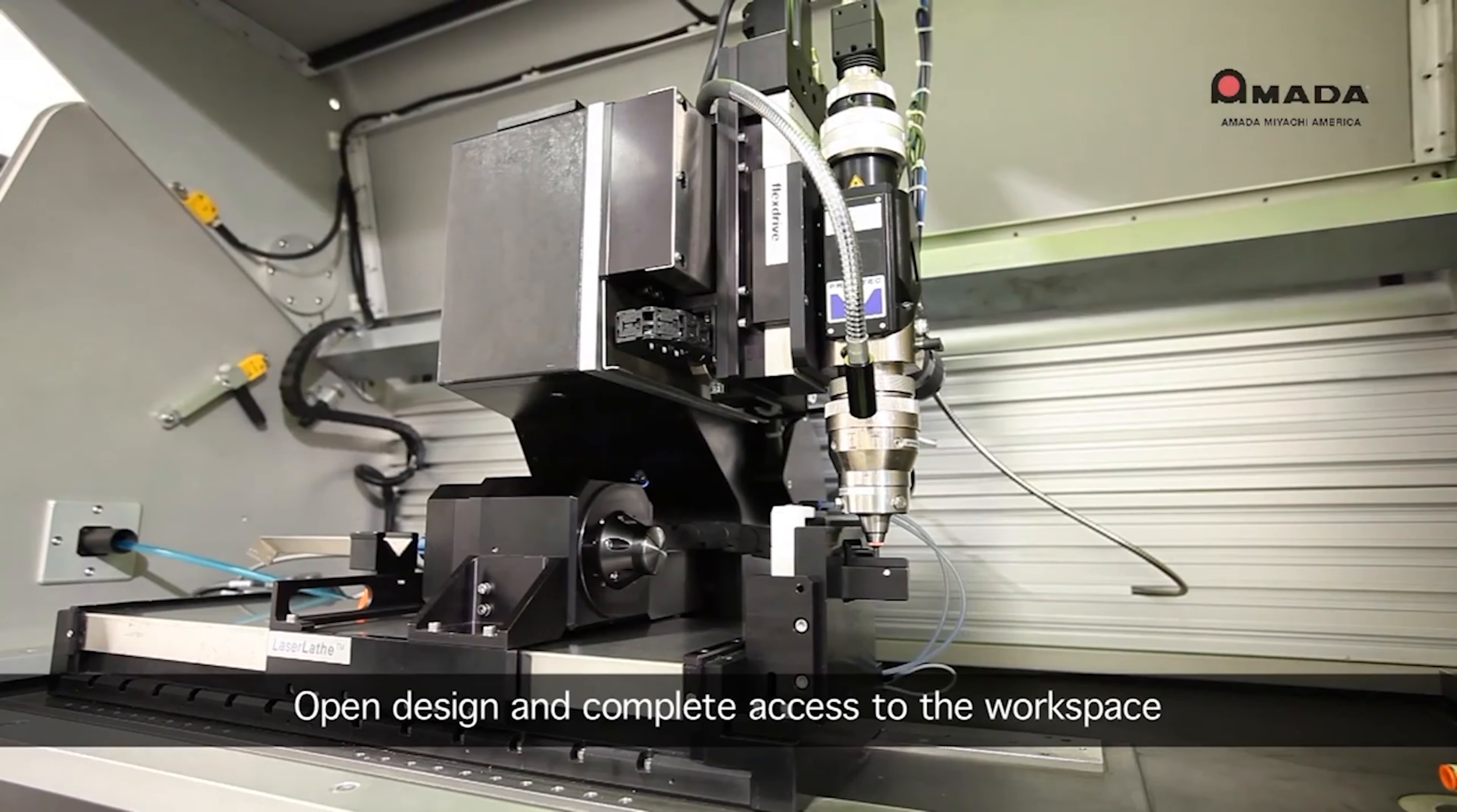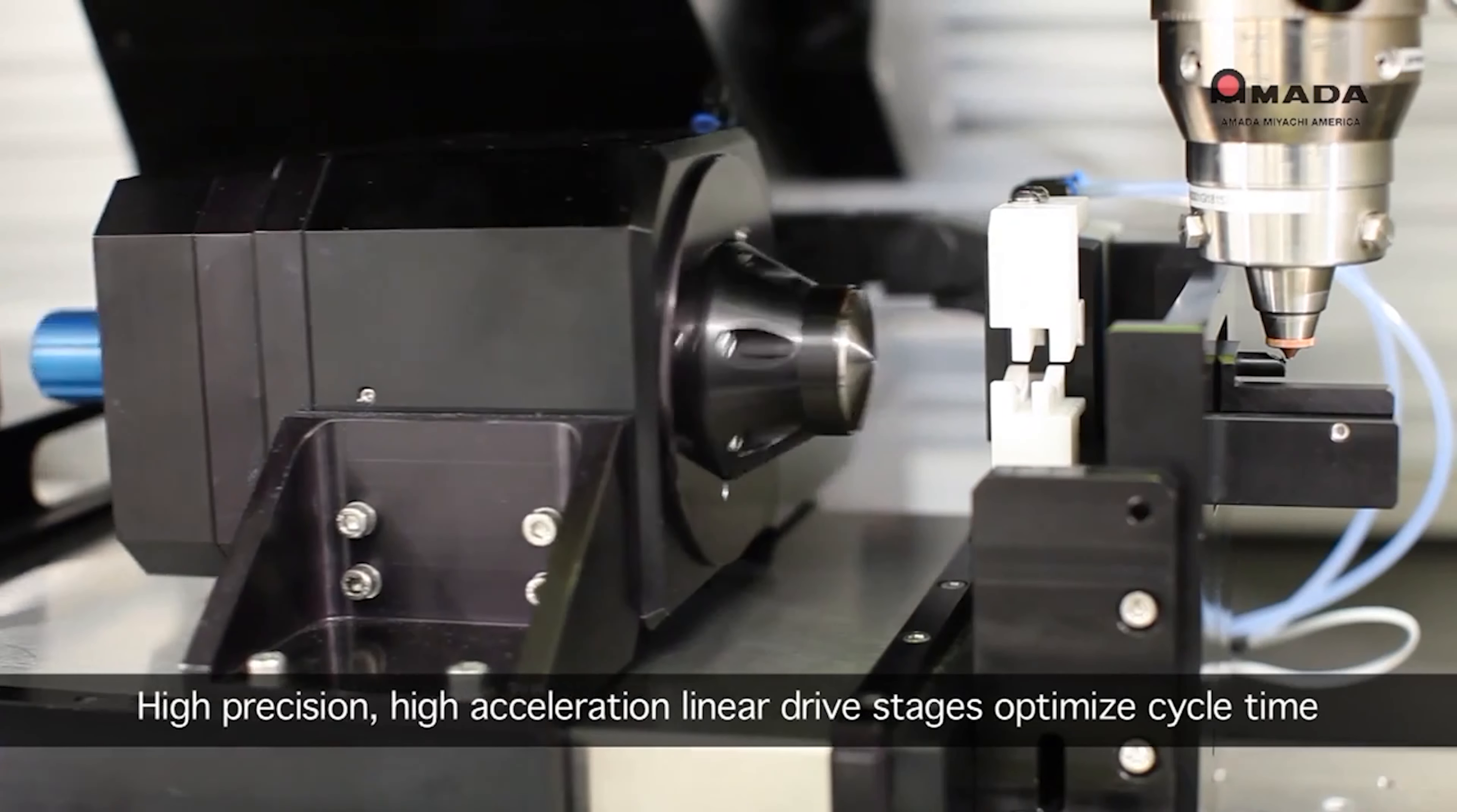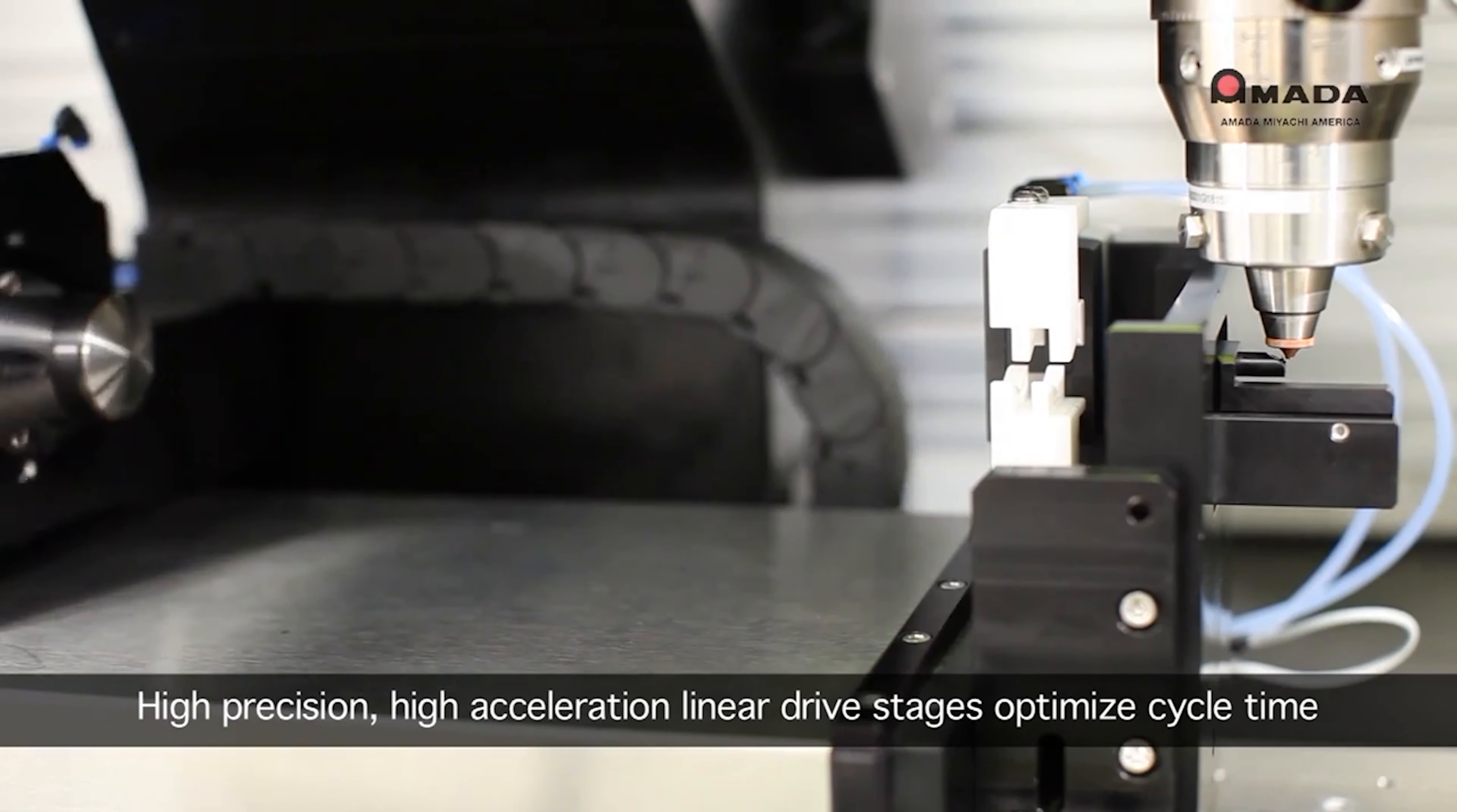In micro laser cutting, we use a laser beam diameter of 5 microns to 10 microns, which provides you the ultra-fine cutting.